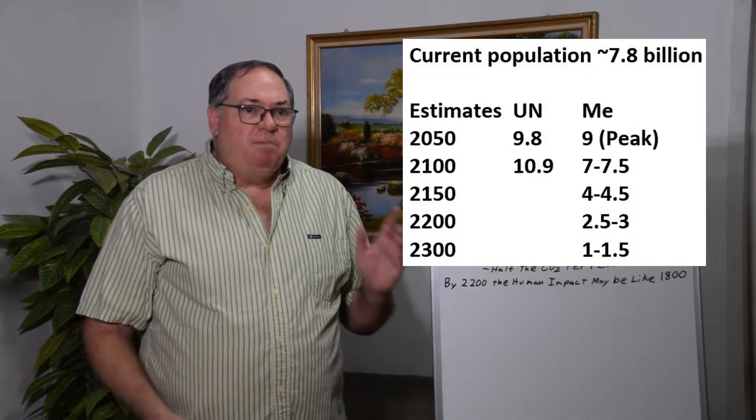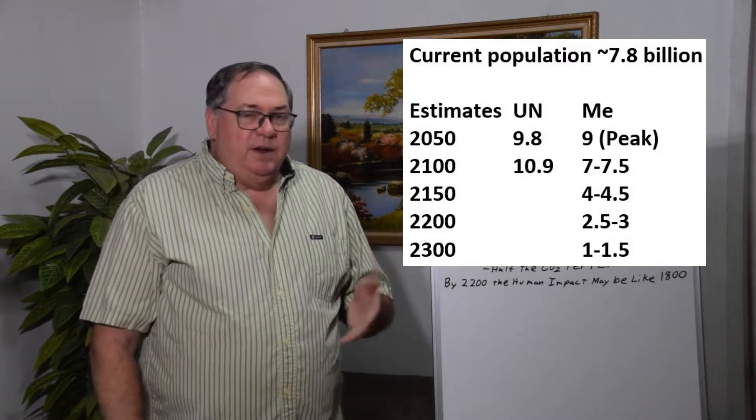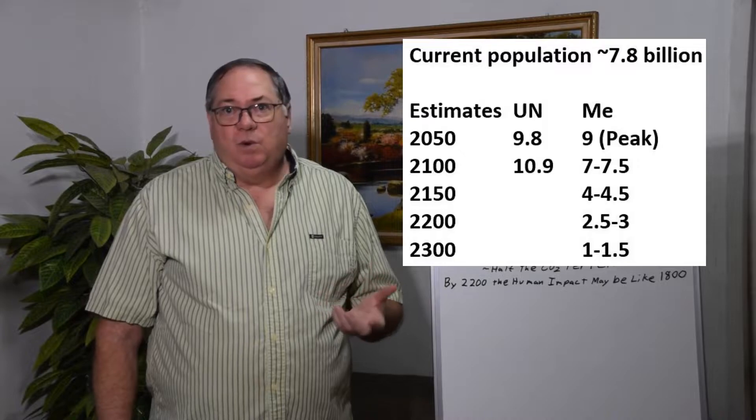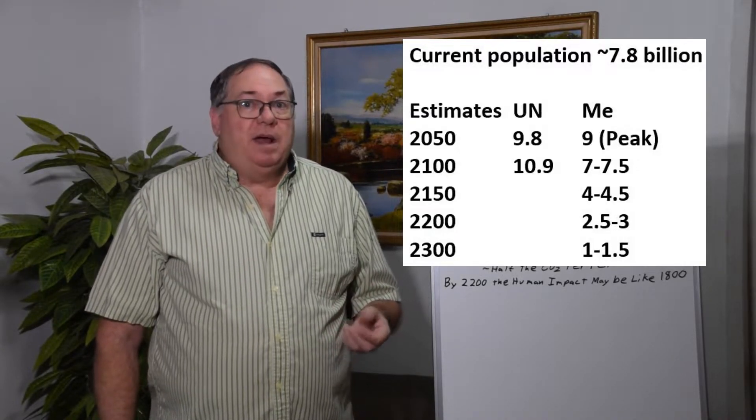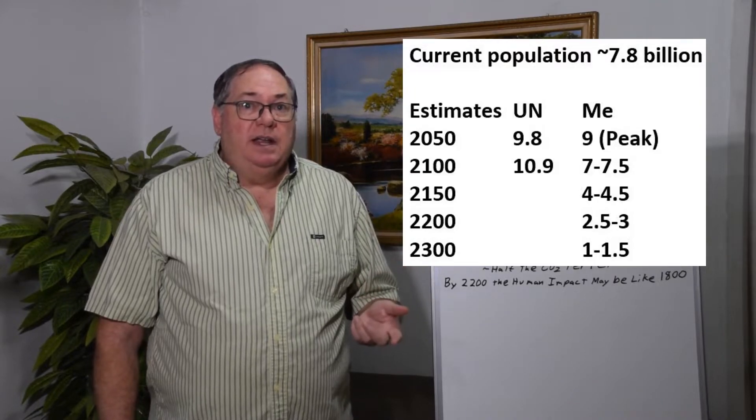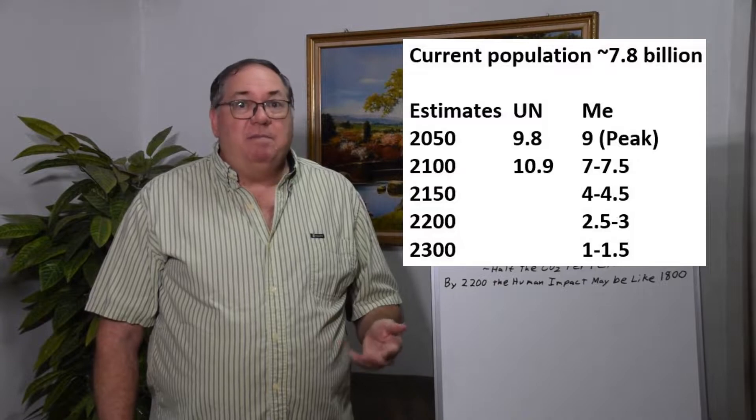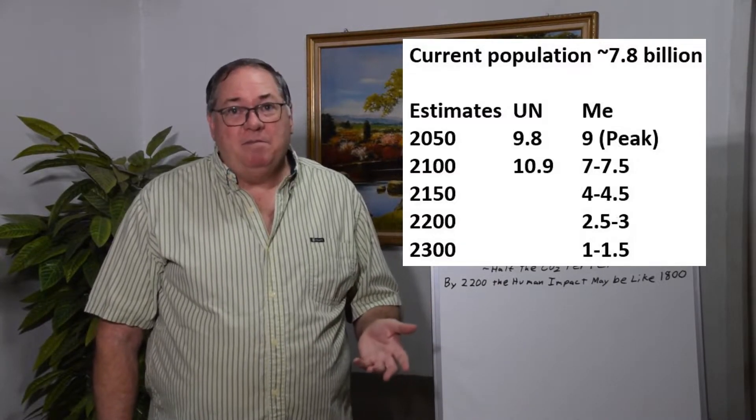But if you translate it even further out, by the year 2150 the population should fall to four to four and a half billion people. And by the year 2200, down to two and a half to three billion. And by 2300, it could fall to a billion or one and a half billion.